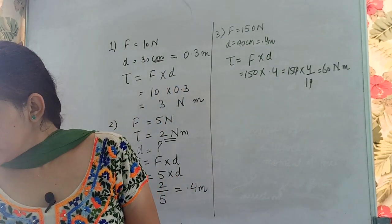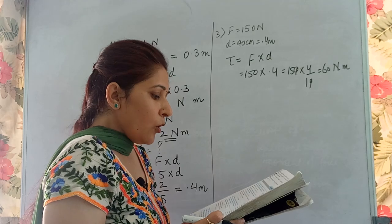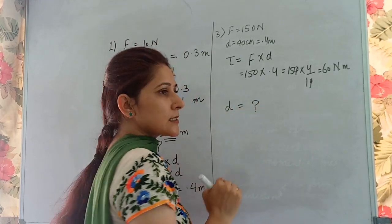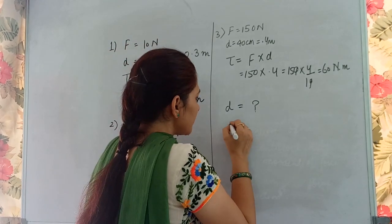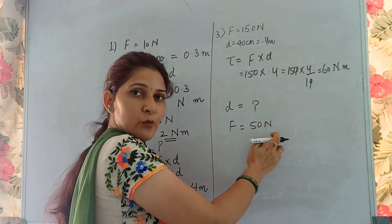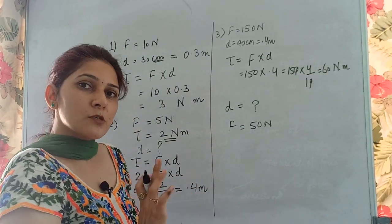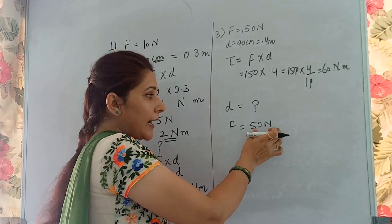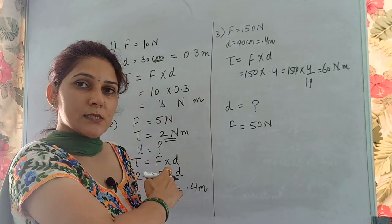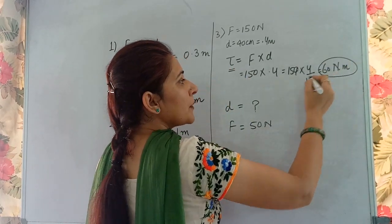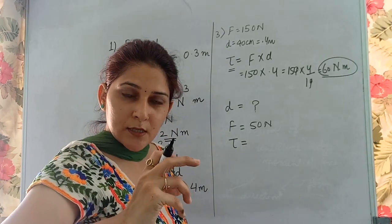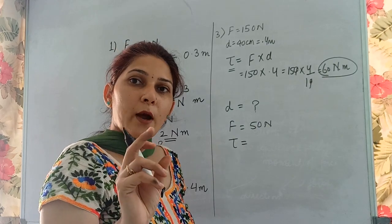Now, how long a handle is required if the mechanic wants to open it applying only 50 newtons? If the mechanic wants to apply less force, the distance must be increased. We discussed this in the previous video. The turning effect required to open the nut is 60 newton meters, as calculated from the first part.